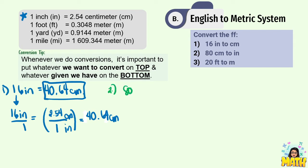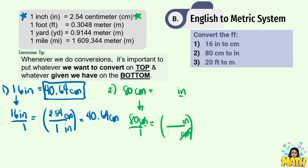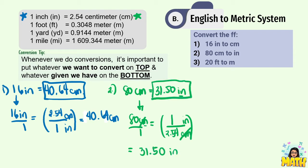Number 2: convert 80 centimeters to inches. We copy the given and multiply it by a fraction where the numerator is the target unit and the denominator is the given. Using 1 inch equals 2.54 centimeters, we get 80 times 1 divided by 2.54, which gives us 31.50 inches. That is equal to 80 centimeters.